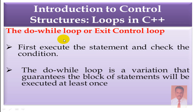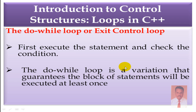Now, do while — also called the Exit Control Loop. The do while first executes the statement and then checks the condition. In the case of do while, it will execute the loop at least once. Contrast this with the while loop, which first checks the condition and then executes. In do while, the statement executes first, then the condition is checked.